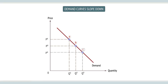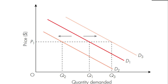Now let's look at shifts in the demand curve. Remember, movement along the demand curve only happens when there is a change in price, while other factors of demand remain constant. A demand curve can shift to the right, caused by an increase in demand due to other factors without a change in price, or shift to the left, caused by a decrease in demand due to other factors without a change in price. When dealing with shifts, we look at factors that affect demand — not price.